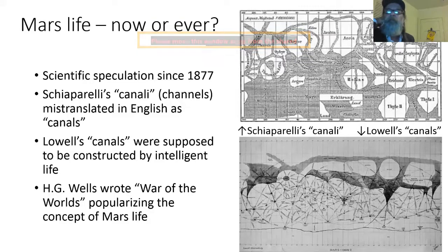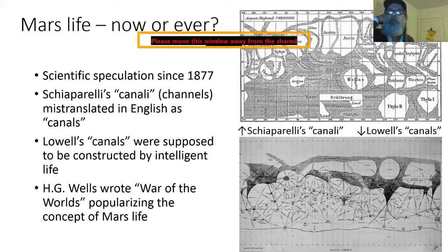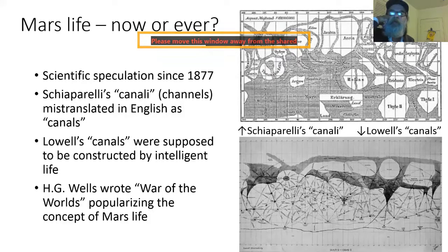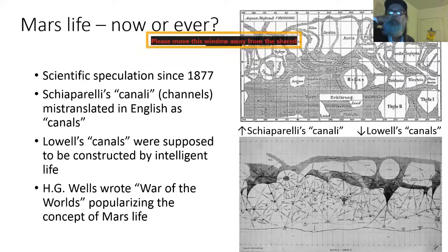This question of life on Mars — now, or has there ever been — has been a subject of scientific speculation since the 1800s. Most of you are probably familiar with Schiaparelli's mapping of the surface of Mars, which he described as 'canali,' which in Italian can mean channels or canals — i.e., either abiotic waterways or biotically constructed ones. But in English translations of his books, it is mostly translated as 'canals.'